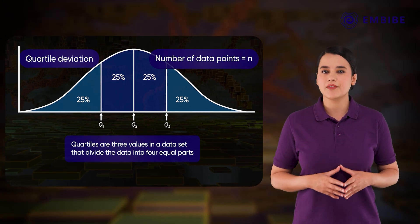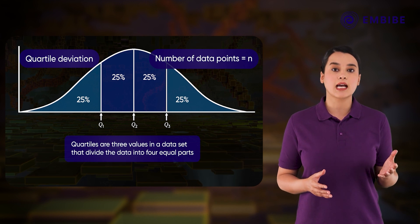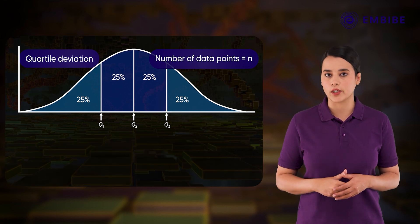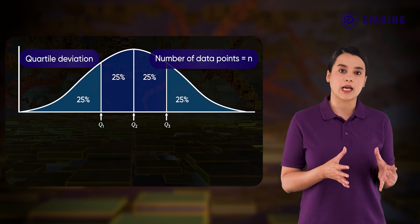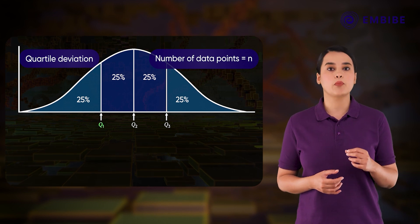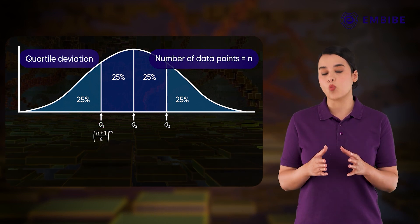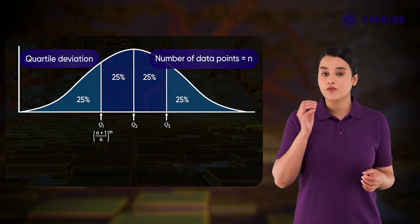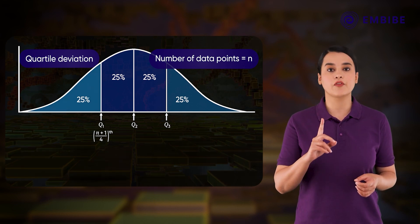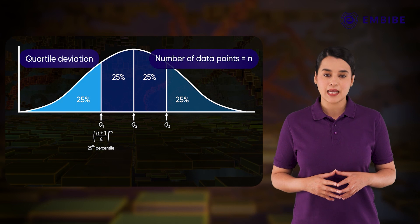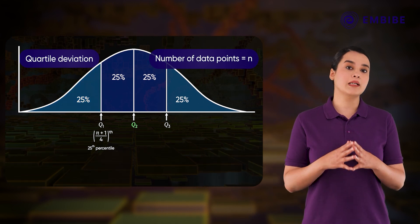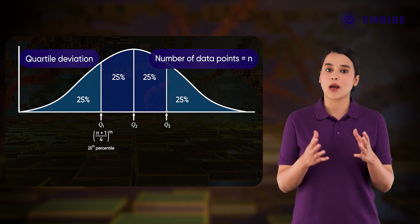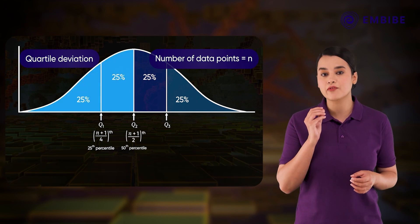Quartiles are three values in a data set that divide the data into four equal parts when the data is arranged in ascending or descending order. The first or lower quartile Q1 is the data point that comes at the (n+1)/4th position, where n is the number of data points — in other words, Q1 represents the 25th percentile. The second quartile Q2 is the median of the data set, representing the 50th percentile.